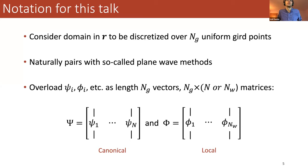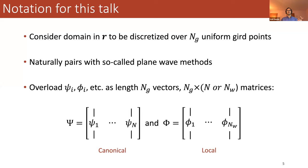A little more notation: I'm going to consider the domain in R discretized over N_G uniform grid points, which comes into play when I talk about the computational complexity of the SCDM method. N_G is the number of grid points. I'm going to overload psi and phi to also be vectors of length N_G. I'll be working primarily with two matrices: capital Psi, an N_G by N matrix of eigenfunctions stacked as columns, and Phi, an N_G by N_W matrix of localized basis functions.